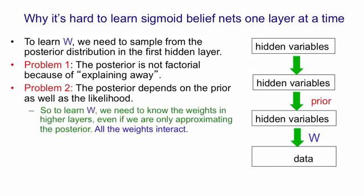To learn W, we need to know the posterior in the first hidden layer, or at least an approximation to it. And even if we're only approximating it, we need to know all of the weights in higher layers in order to compute that prior term.